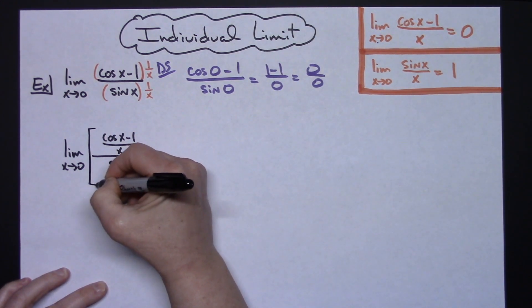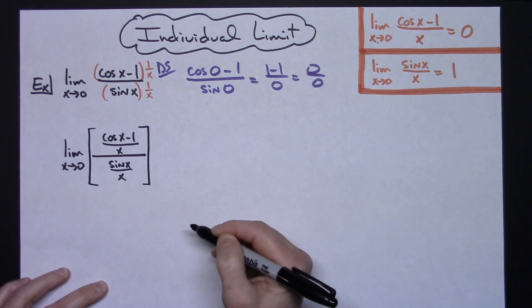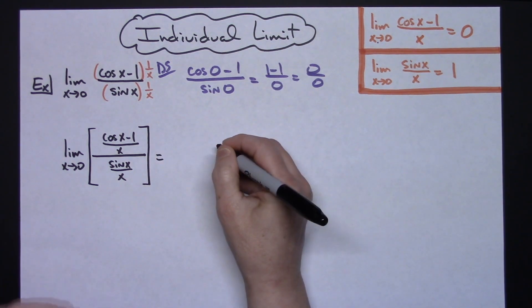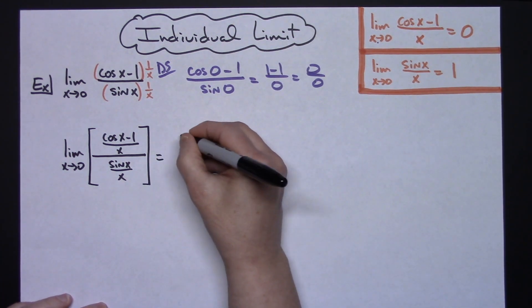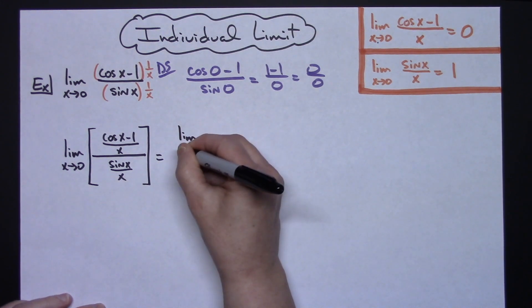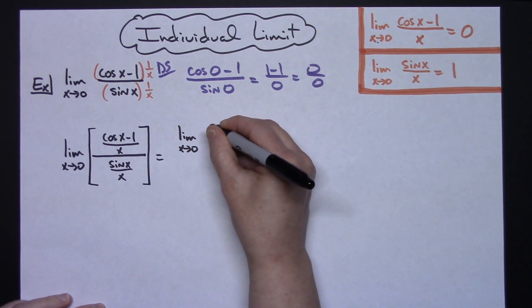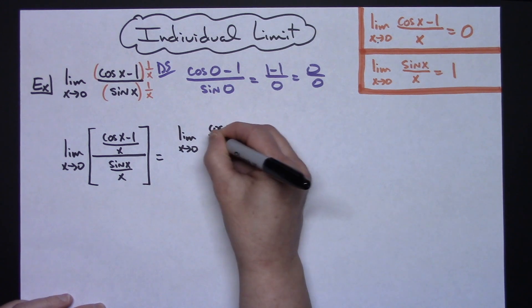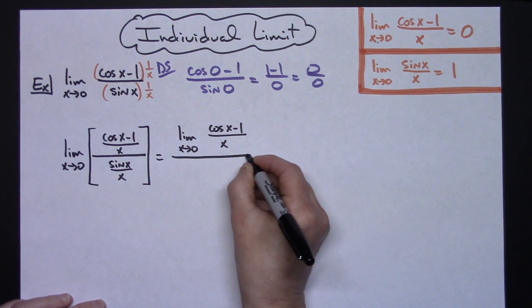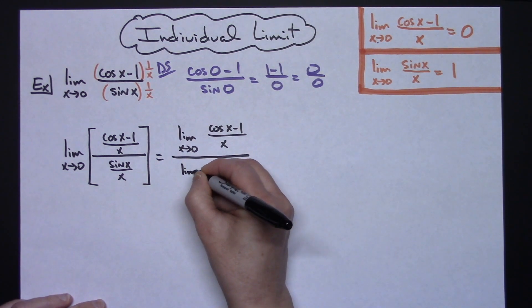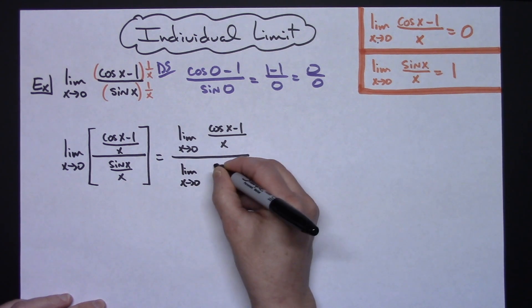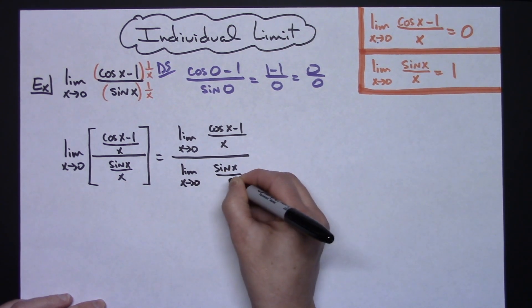I can take the limit of the numerator and the limit of the denominator. So let's go ahead and put that step in just so we see that. The limit as X approaches 0 of cosine X minus 1, all over X, and then the limit as X approaches 0 of the sine X over X.